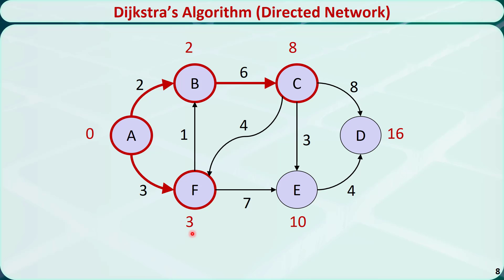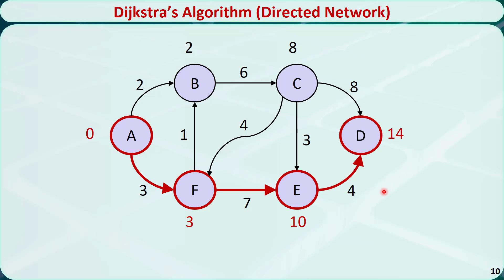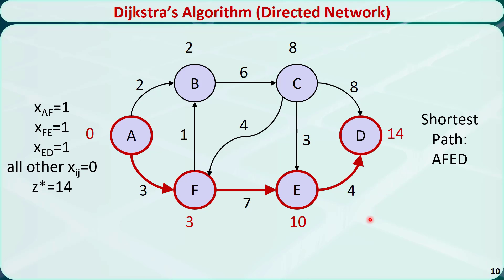Now out of all the unvisited nodes, node E has the shortest distance, so we move from F to E. Node E has just one direct neighbor, node D. The distance of node D is 10 plus 4, equal to 14, which is smaller than the old value 16, so we replace it with 14. Now node D is the only unvisited node, so we move from E to D. The shortest path from A to D is A-F-E-D, with a distance of 14. That is how to solve the shortest path problem using Dijkstra's algorithm for directed networks. Thanks for watching.